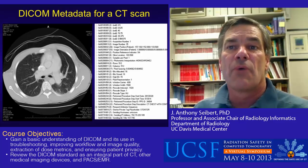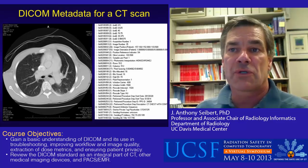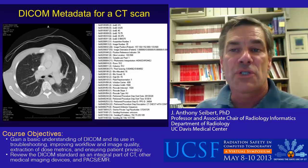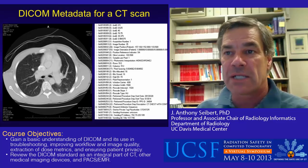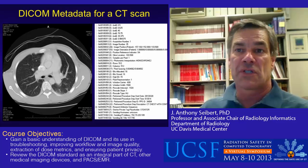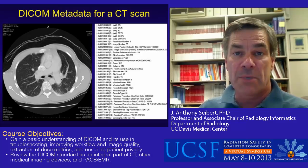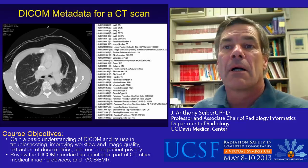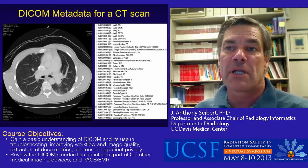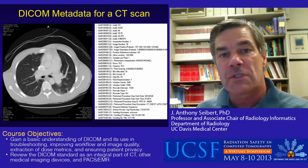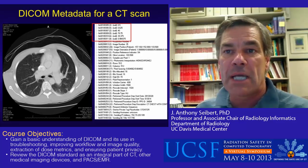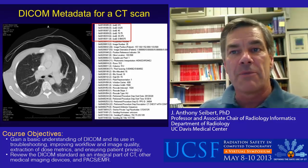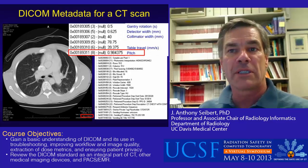Recently introduced attributes to describe multi-detector row scanners and operation details are now found in tags 0018,93XX to indicate parameter settings such as detector width, collimator width, and pitch. Closer inspection shows the tags and their corresponding values and units — for instance, 0018,9311 provides the pitch value. This information is often mapped on the image overlay, which is helpful to the radiologist when interpreting the study.